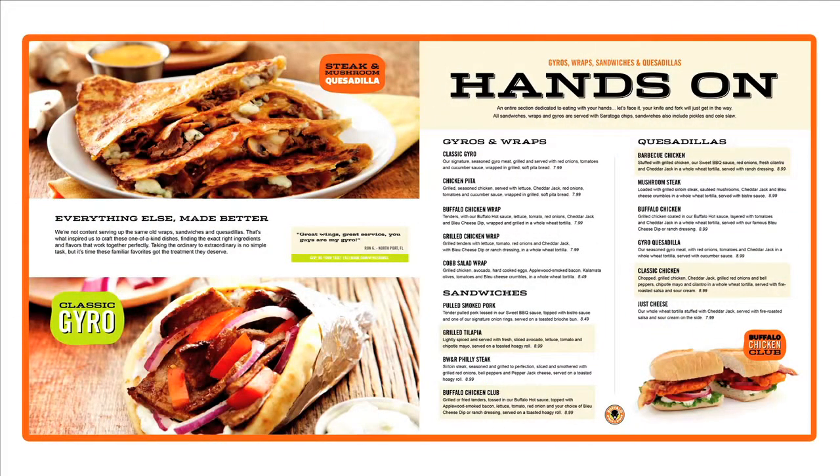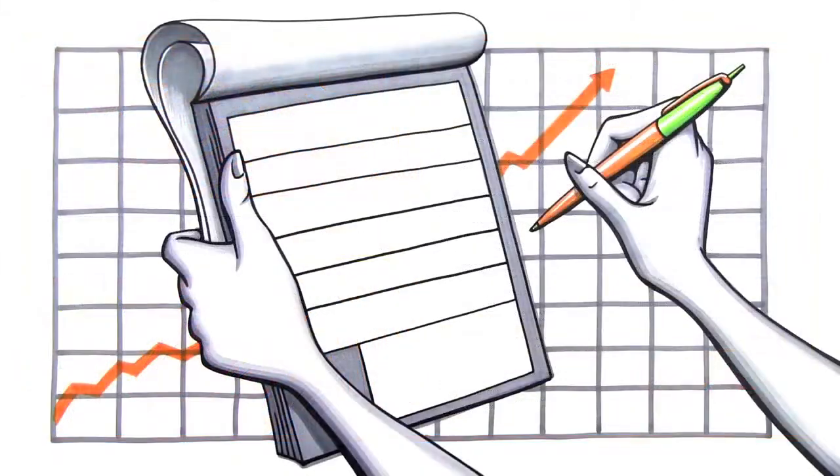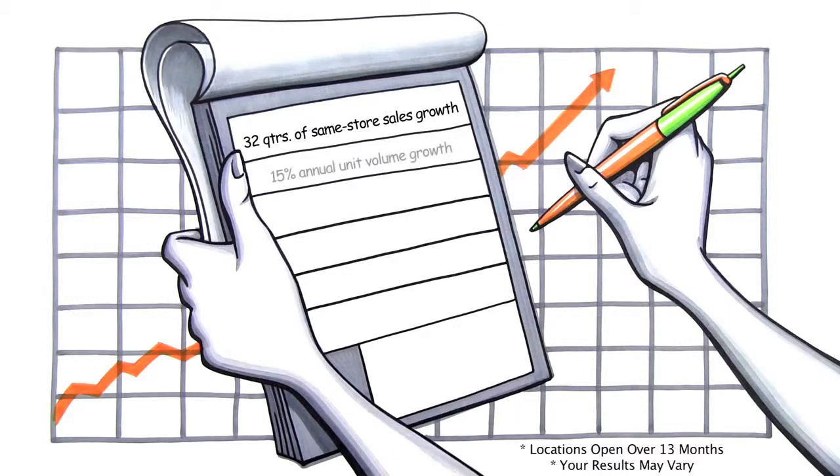But great food is only one part of what BW&R is about. We're also about 32 quarters of positive same-store sales growth, 15% annual unit volume growth for eight years in a row, and a 3 to 1 ratio of food to alcohol sales.